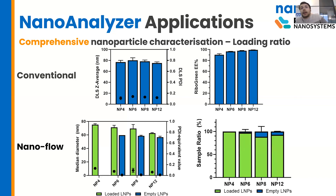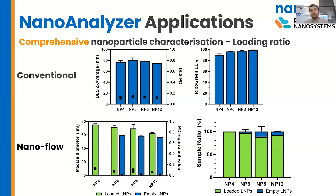The last thing here is the loading ratio. I was expecting to see a more significant impact of the MP ratio on the percentage of loaded particles, but even at MP8 and MP12, we're not seeing a massive increase in this empty LNP population — slightly different from what we were seeing with the other RNA species.